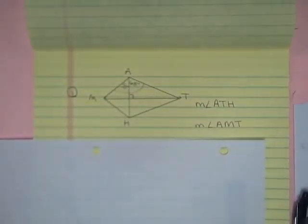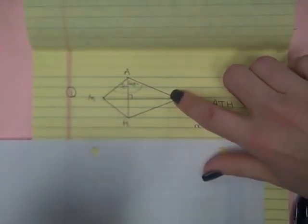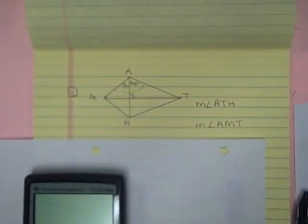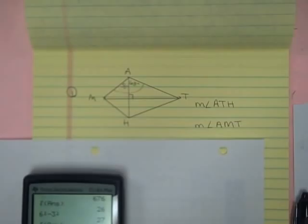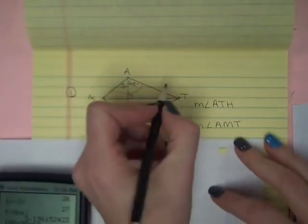one angle is 68, then we can find the missing angle that goes right here in this little corner. So 180 minus 90 minus 68 and we get 22 degrees.